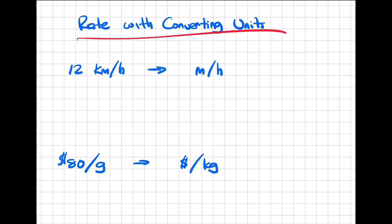Now that we understand what a rate is, it's nice when the units they give you are the same as the units they want in their answer. But that's not always the case — sometimes we have mixed units from one to the other. So we have to know how to convert these units with a ratio or a rate. This is very important and will be used quite a bit through science in all your years of education. So if I write this out, it's going to be 12 kilometers per hour.